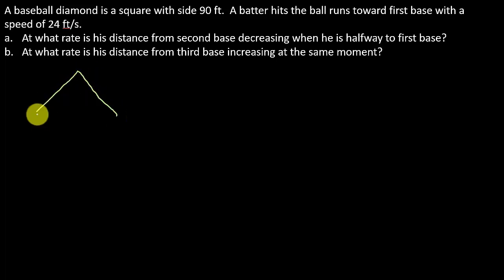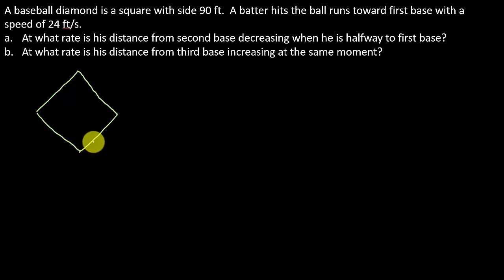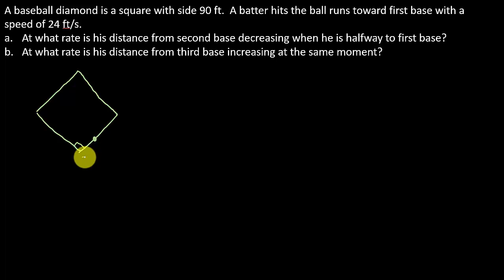Here we have a baseball diamond. So here's first base, second base, third base, and then home plate. We need to label this stuff. A guy hits the ball and starts running, so let's put him right here, anywhere along the baseline. The distance from home plate is changing the whole time he's running. It says it's a square, so we know each of these are right angles. Let's call this distance from home plate to the runner X, so that means the distance from the runner to first base would be 90 minus X, because the sides are 90 feet.